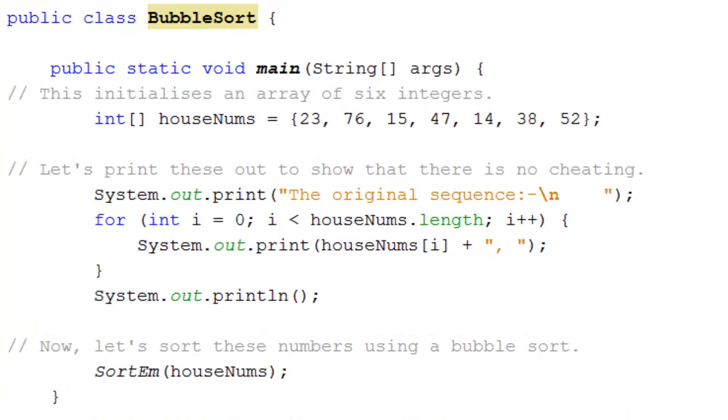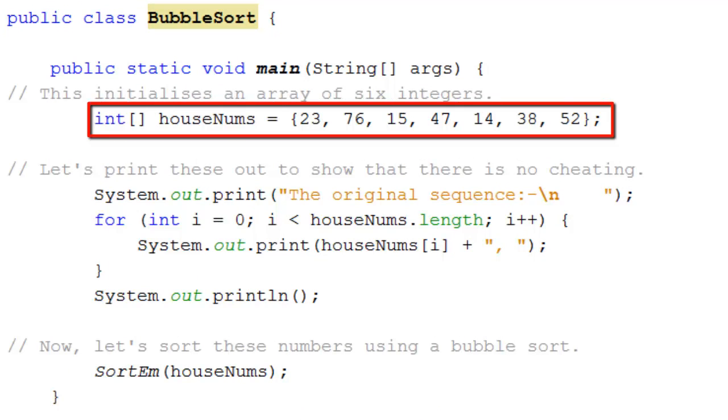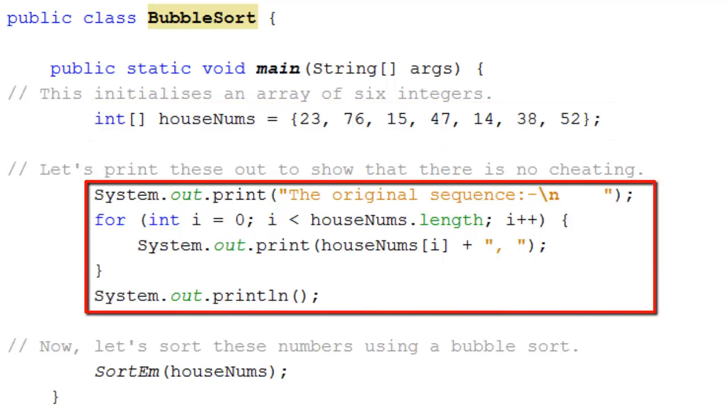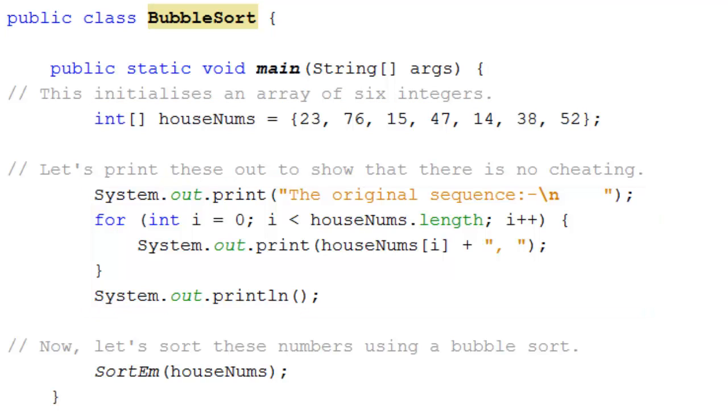Let's suppose that we have a list of house numbers. We want to put these numbers into order. Now before I do that, I'm going to print them out just to show you that there is no magic in the numbers. And then I'm going to go on to this procedure. SortEm is the bubble sort.